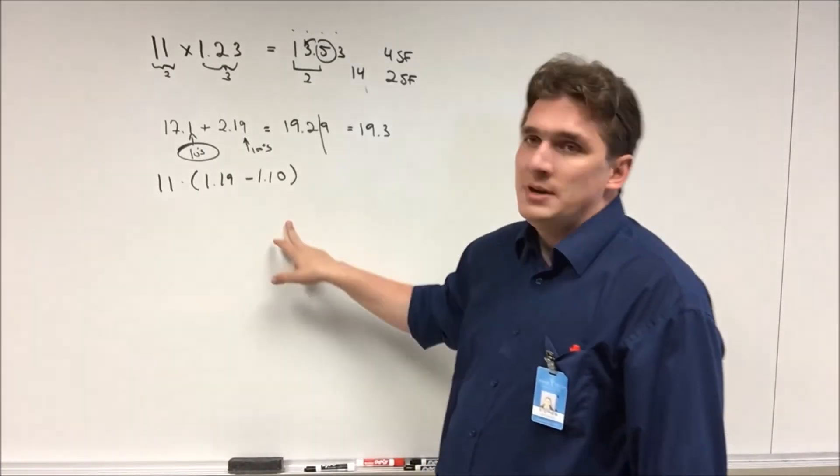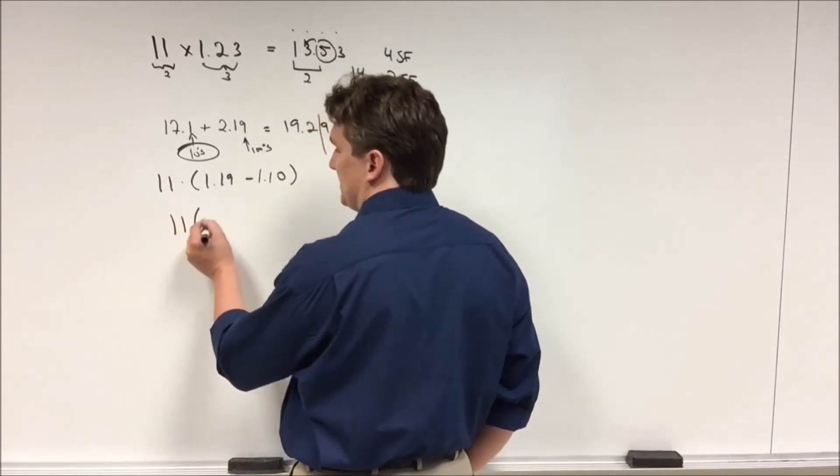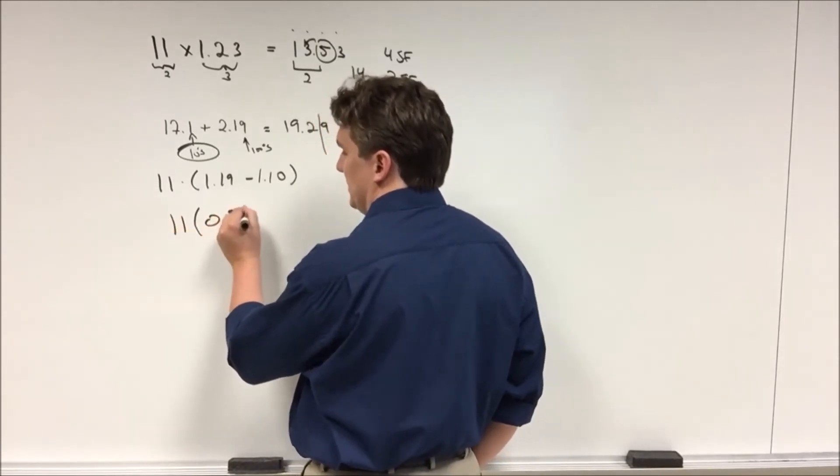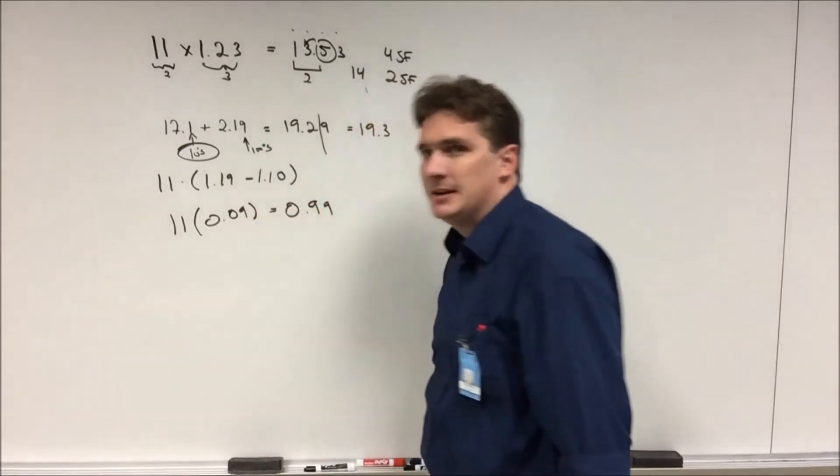So in this case we have 11 times the quantity 1.19 minus 1.10. If we simplify that algebraic step we get 11 times 0.09 which will give us an answer of 0.99.